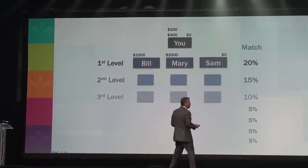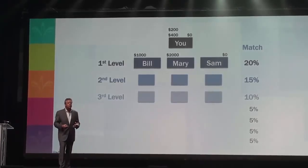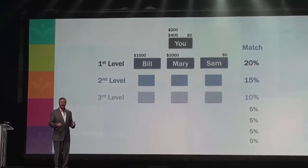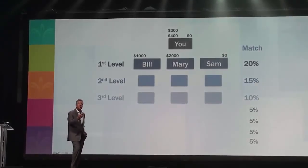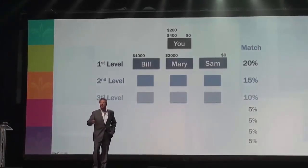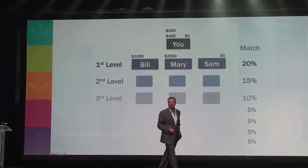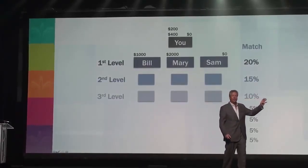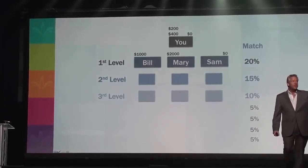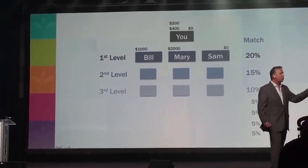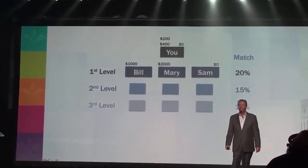We've got an incredible compensation plan, and we've got bonus pools and diamond pools. Everybody wants to make diamond in the company — diamonds make a lot of money and they get to share in the worldwide sales of the company. This company went from $60 million in 2011, to $120 million in 2012, to $250 million the next year. We're on track to do over $400 million in the next 12 months.